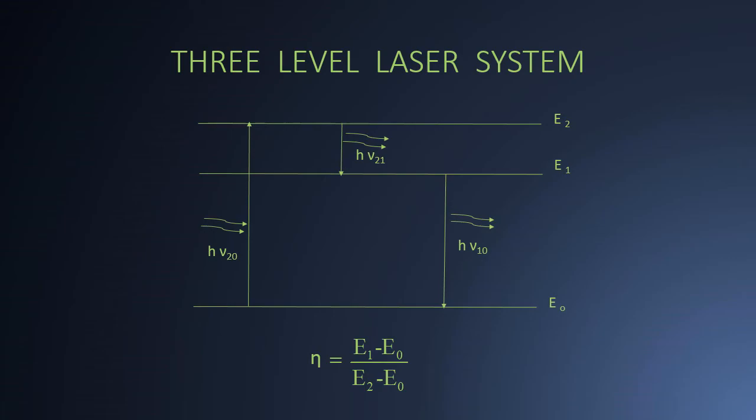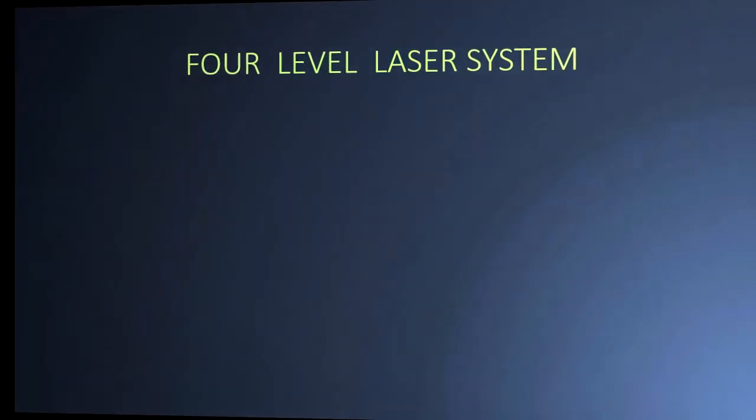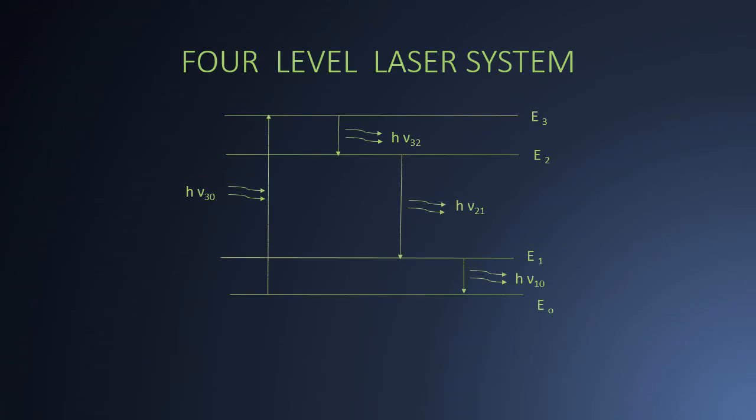Now let us come to 4 level laser system. In this system, there are in total 4 energy levels in which atoms of laser medium can stay. E0 is ground state, E3 is highest energy level, E2 is metastable state, and E1 is also metastable state.